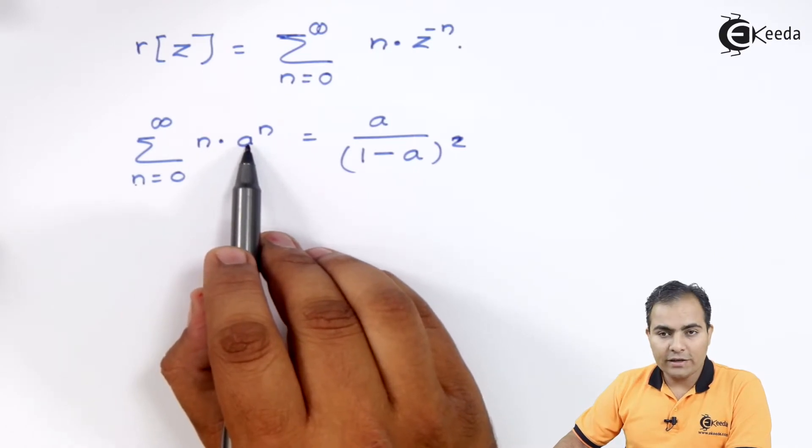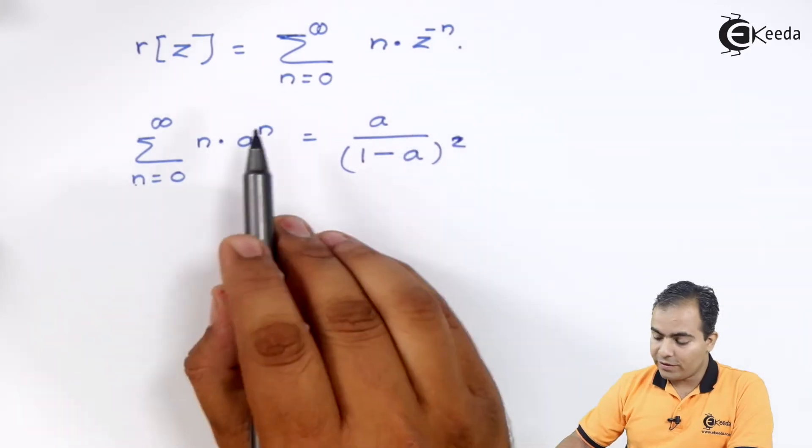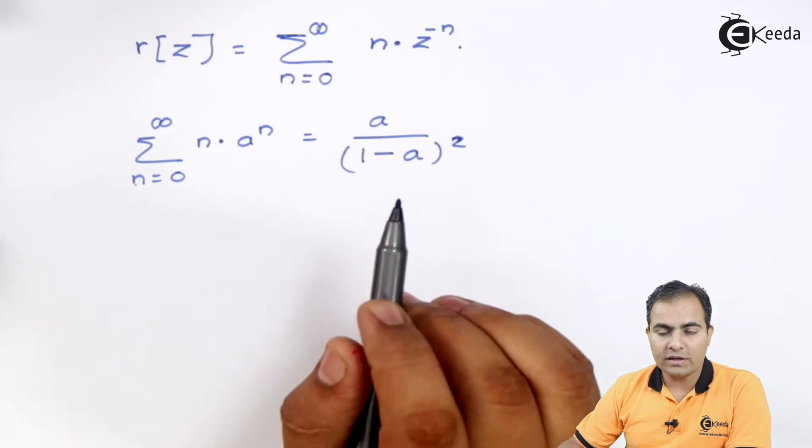Now, where we have a to the power n and in the result we have z to the power minus n. So, if I said your a value is z to the power minus 1, then both these formulas are same.